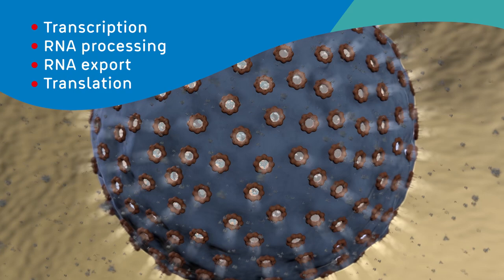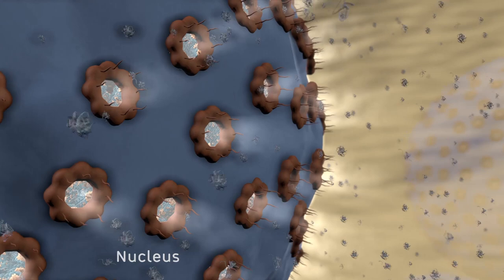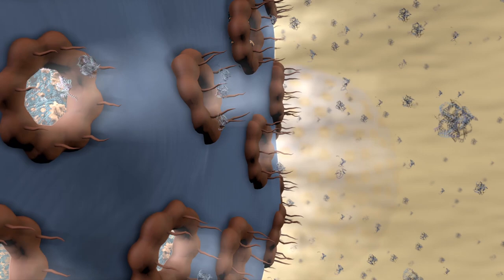Gene expression in eukaryotes follows four general phases: transcription, RNA processing, RNA export, and translation. Here we see the nucleus, where DNA is transcribed to produce a nascent RNA. This RNA is processed into mature messenger RNA, or mRNA, before its export into the cytoplasm. In the cytoplasm, mRNA is translated into proteins, which carry out a wide variety of functions in the cell.